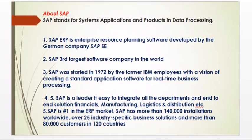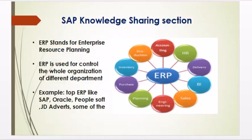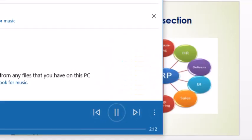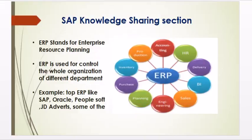Now, what is ERP? ERP stands for Enterprise Resource Planning. ERP integrates different types of departments — such as accounting, HR, delivery, planning, purchasing, and inventory — into one system. ERP is used to control and manage the whole organization across all its different departments from a single platform.